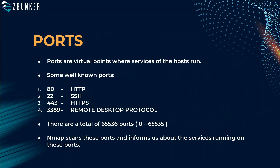Ports are virtual points where services or applications run. For example, if you start Firefox, it will be assigned a port on your host because it's a service. Any service running on your computer will be assigned a port number — that's how it identifies itself. There are well-known ports: port 80 is HTTP, 22 is SSH, 443 is HTTPS, and 3389 is Remote Desktop Protocol. An administrator can change port numbers to hide their services, though Nmap will still eventually find them.